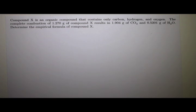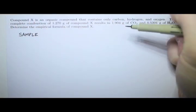Okay, this is a combustion analysis problem. Compound X is an organic compound that contains only carbon, hydrogen, and oxygen. And we're gonna combust this, and that means burn it in the presence of oxygen. And that results in 1.904 grams of carbon dioxide and 0.5201 grams of water. So we started with our sample, and our sample had 1.270 grams.